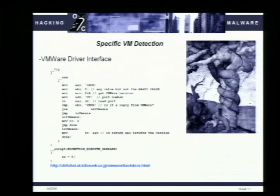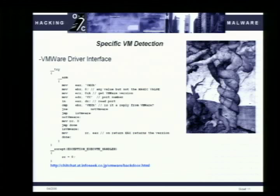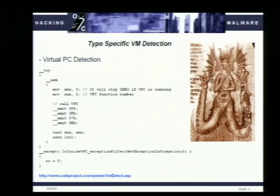More sophisticated methods for detecting virtual machines use proprietary protocols inside the VMware driver interface. From a user-level program at Ring 3, you can set up a VMXH operation — a special code to send to VMware — and use the get-VMware-version call. You set it to the VX port and do an IN operation to read from that port. If something comes back, that's a VMware port; if not, it triggers an exception. This also applies to the Virtual PC interface using the EMIT series of calls.